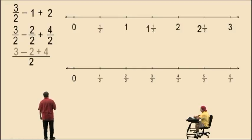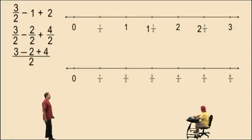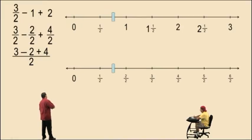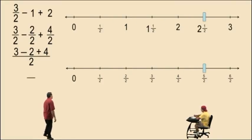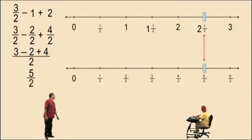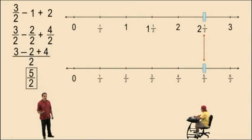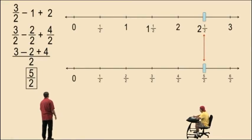Remember, we work with our numerators. Our denominator remains unchanged. So here we go: we now do 3 halves and we take away 2 halves — that gives us 1 half. And now we add 4 halves and that gives us our answer of 5 halves. And don't forget, 5 halves is equivalent to the mixed number 2 and 1 half.